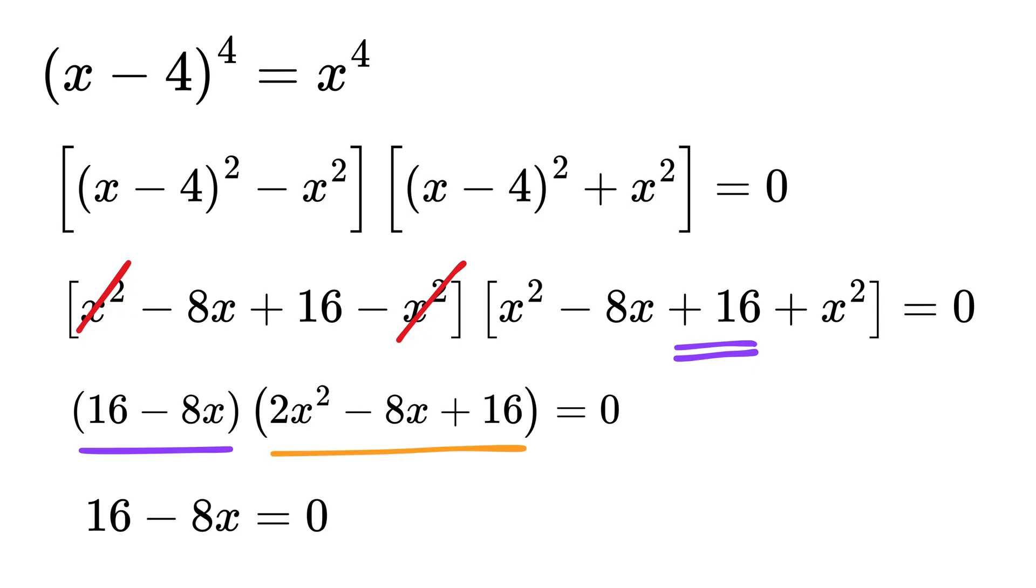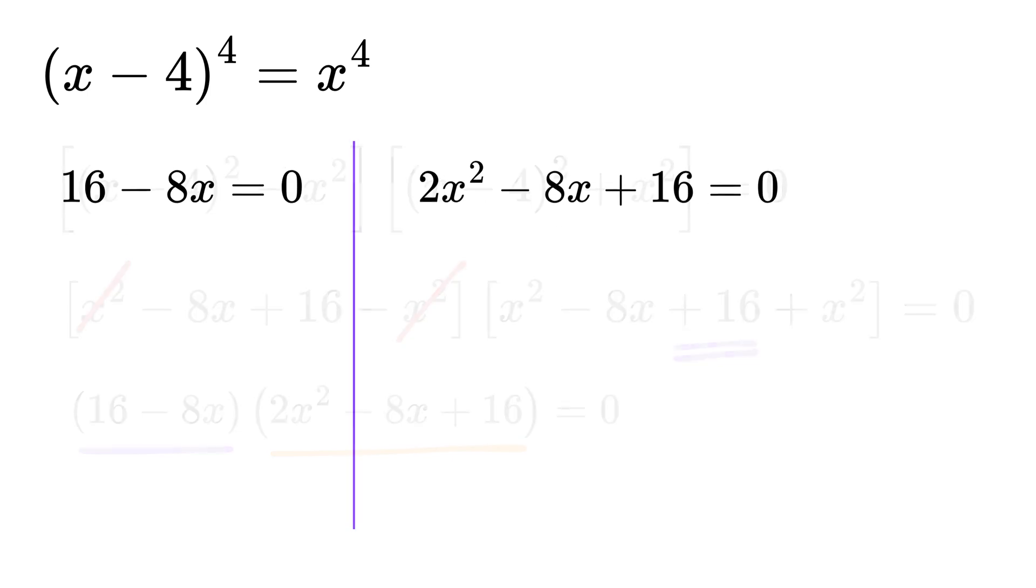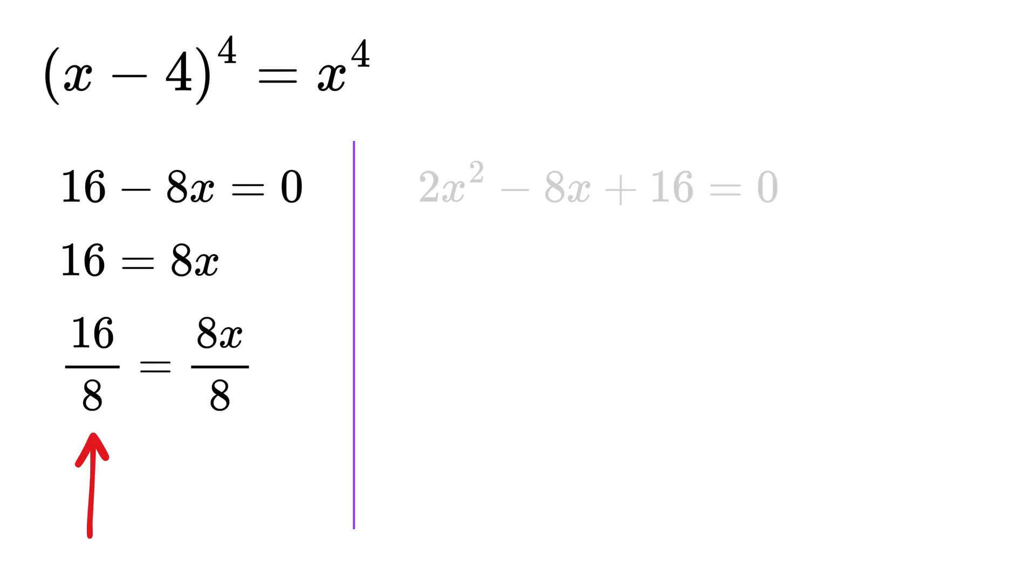So from both these factors we get two solutions. Either 16 minus 8x equals 0 or the second solution is 2x square minus 8x plus 16 equals 0. First solve this one. Take 8x on the right side to get 16 equals 8x. Now divide both sides by 8 to get 16 divided by 8 equals 8x divided by 8. 16 divided by 8 is 2 and from the right-hand side 8 gets cancelled out. So we get x equals 2 as our first solution.